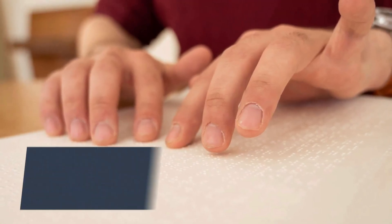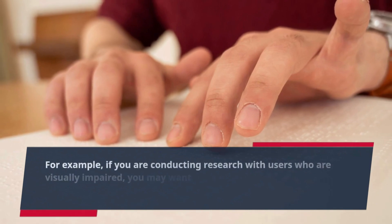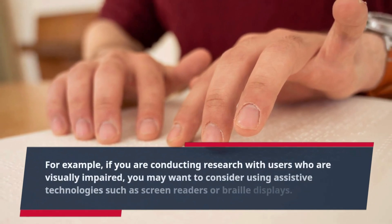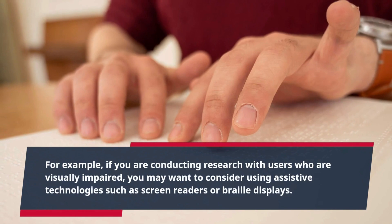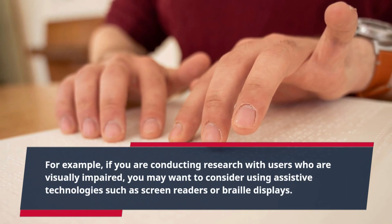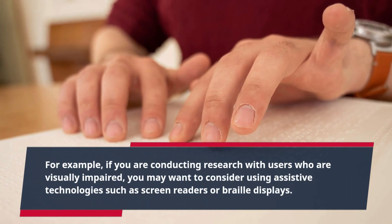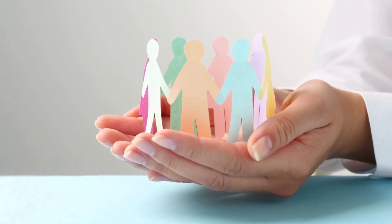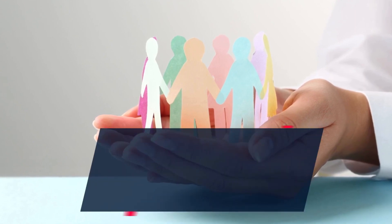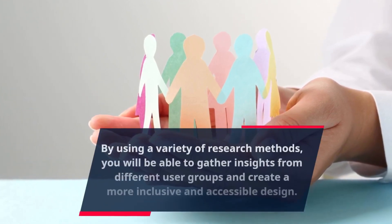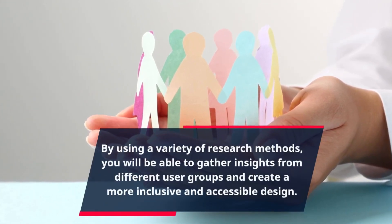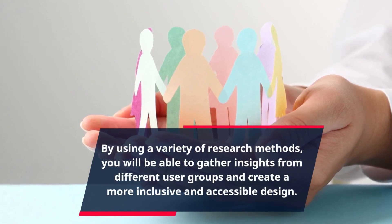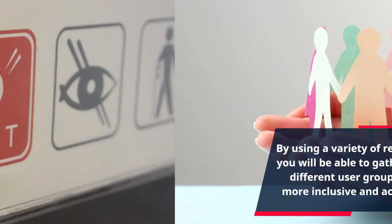For example, if you are conducting research with users who are visually impaired, you may want to consider using assistive technologies such as screen readers or braille displays. By using a variety of research methods, you will be able to gather insights from different user groups and create a more inclusive and accessible design.